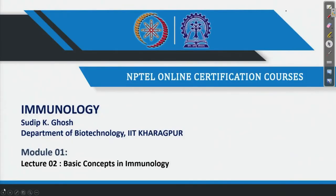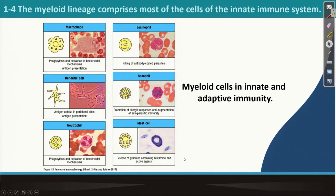Welcome back to my second lecture. In the last lecture we ended up with response time. Now we are going to speak about the myeloid lineage that comprises most of the cells of the innate immune system.